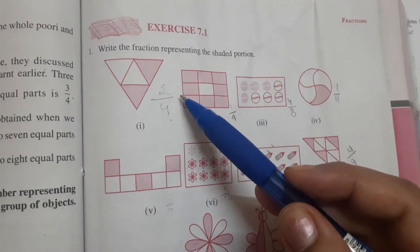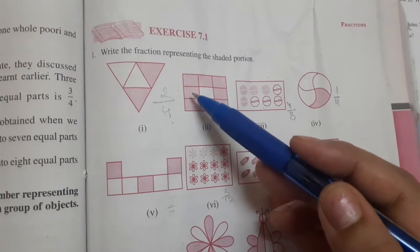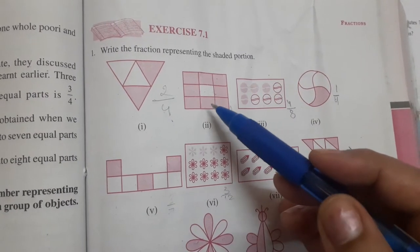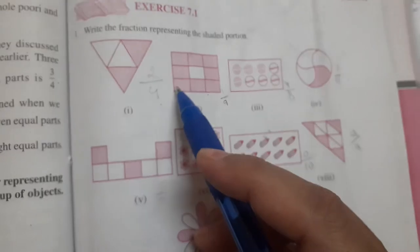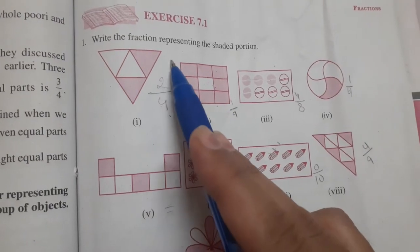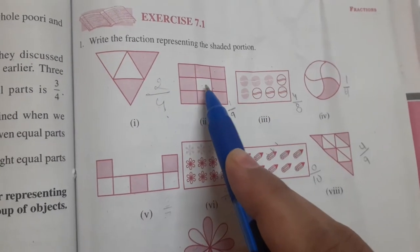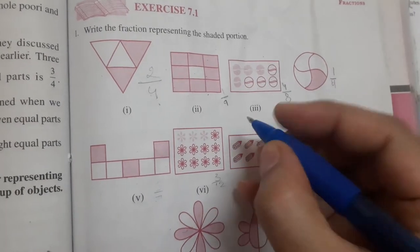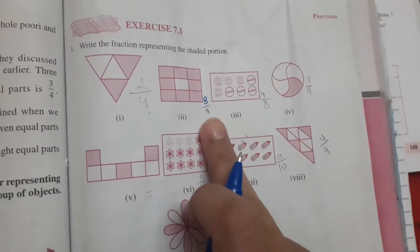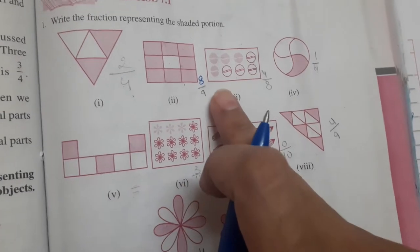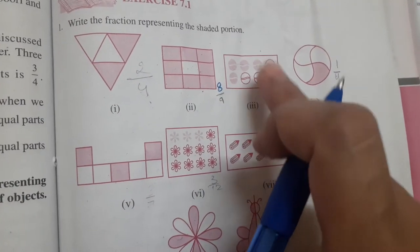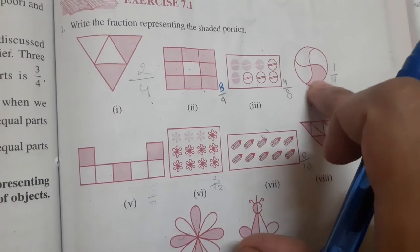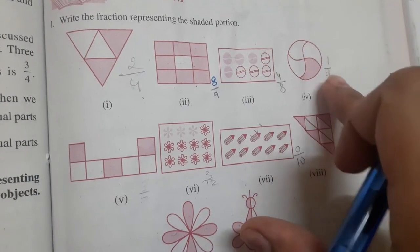Now this figure, how many equal parts are here in this figure? 1, 2, 3, 4, 5, 6, 7, 8, 9. This figure is divided into 9 small parts. Write the fraction representing the shaded. Only this is not shaded, rest all the parts are shaded. That means the fraction will become 8 by 9. Next here, 8 balls are there in total and 4 are shaded, so the fraction is 4 by 8. In this ball, 1 part is shaded out of 4 equal parts, so 1 by 4.